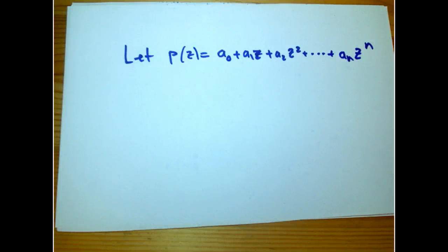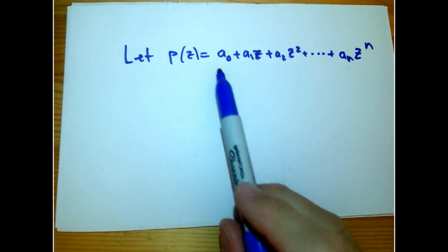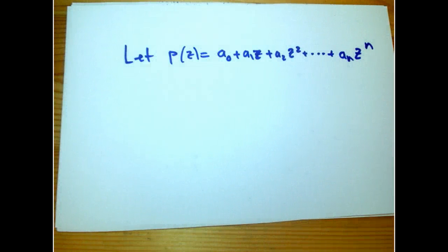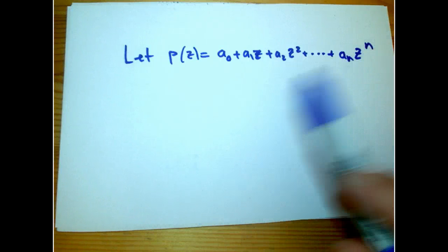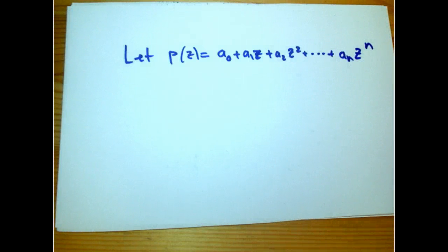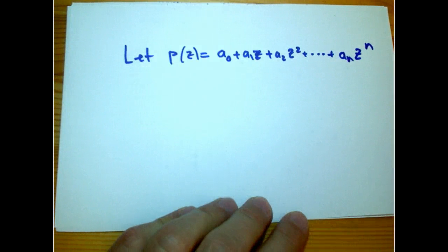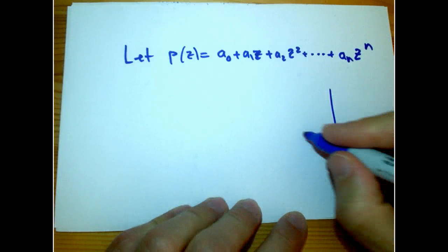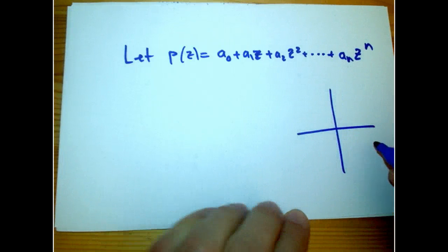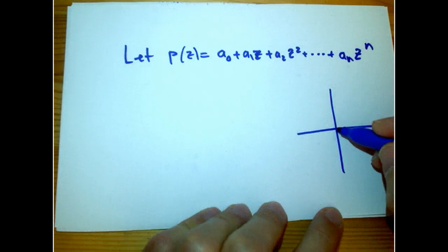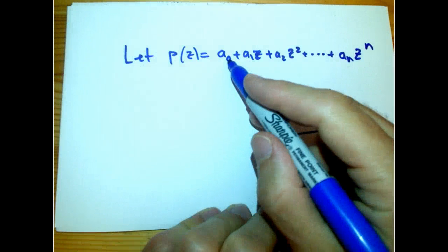Now let's prove the fundamental theorem of algebra. We've got a general polynomial with complex coefficients, and n is greater than zero, so it's non-constant. The first thing — and this is where topology comes in — is if we look at the behavior of that on the complex plane, P of zero is just going to be some complex number, A naught.